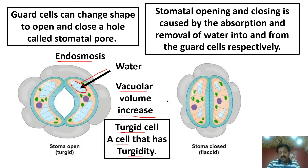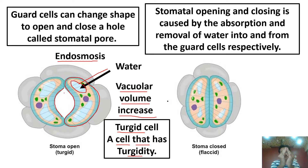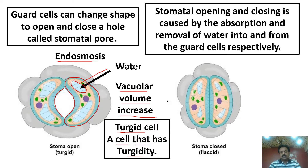Turgidity — dear students — is the pressure that water exerts on the cell wall. The water pressure applied on the cell wall makes the cell turgid, and the stomatal aperture becomes open. When water enters, the inner wall becomes concave. When water leaves, both inner cell walls go straight and stomata close. When water enters again, the inner walls become concave again and stomata open.